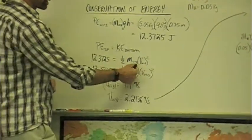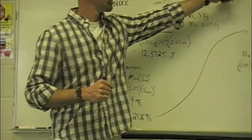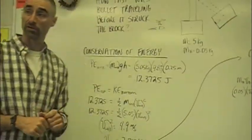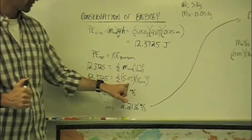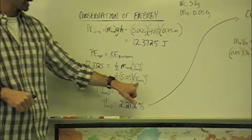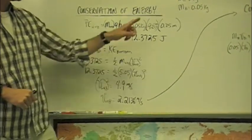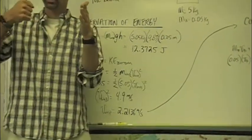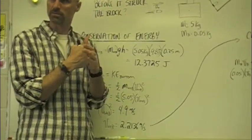And I can then plug in our mass, 5.05, and solve for the velocity of the wood plus the block. Initially, right here when the bullet hit it and it started its path upward. Does that make sense? Okay.